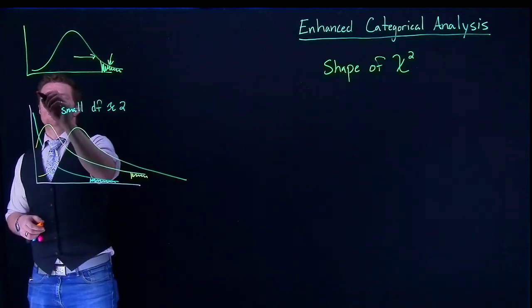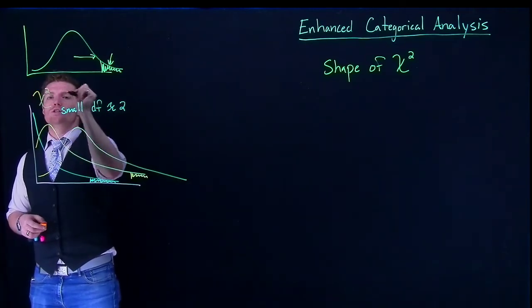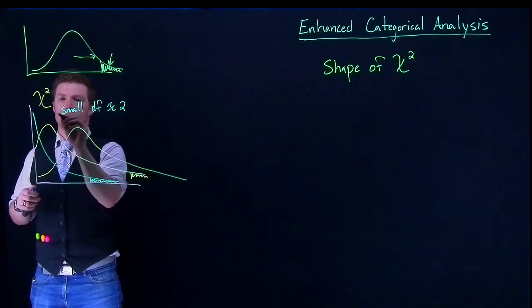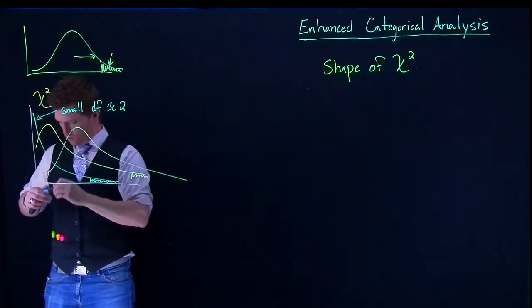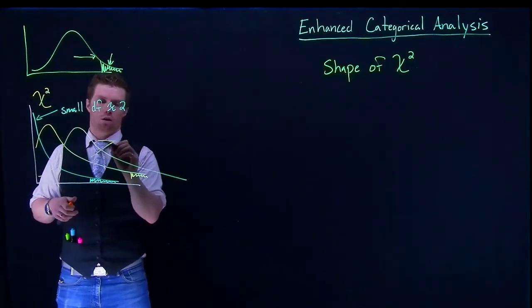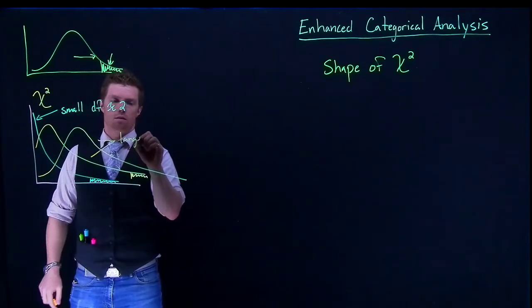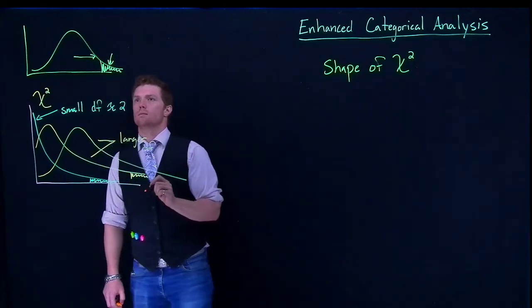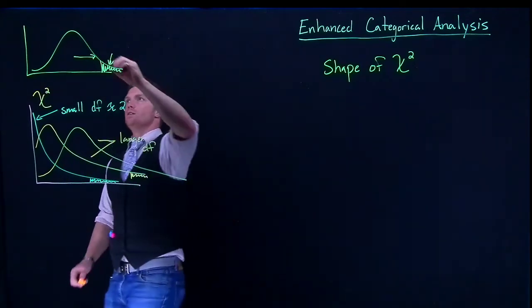Let's label this real quick. This was for our chi-squared—this is for small degrees of freedom in blue, and then these are larger degrees of freedom. And we can label this one as normal.